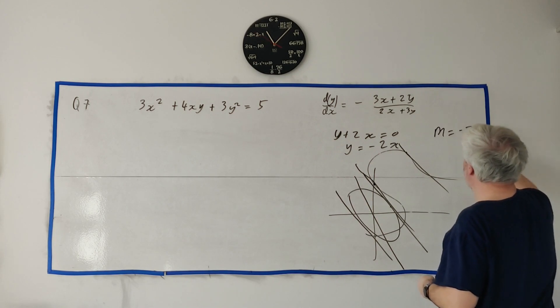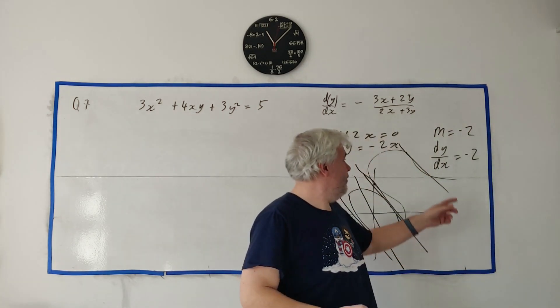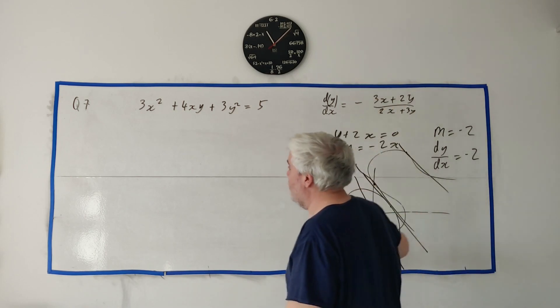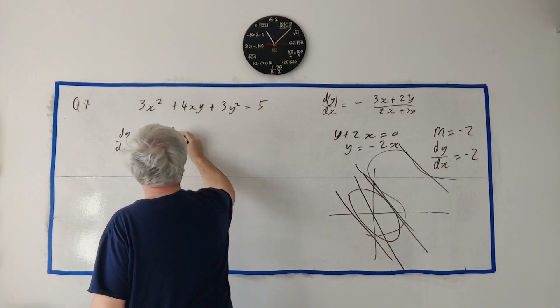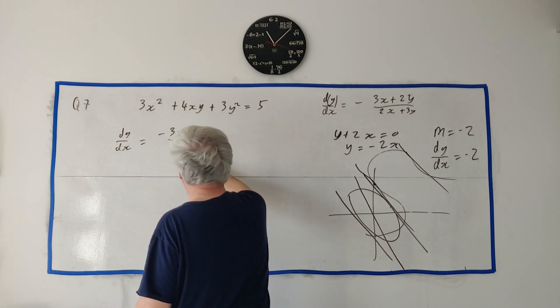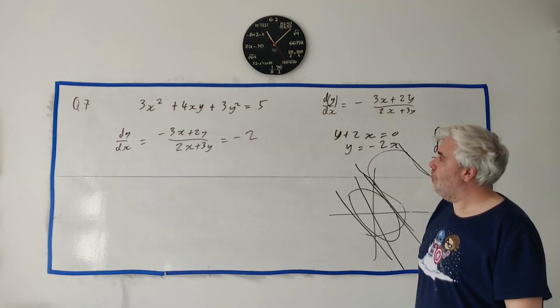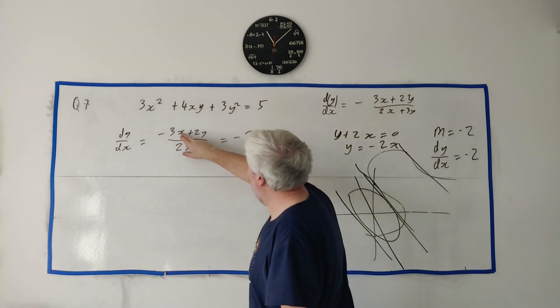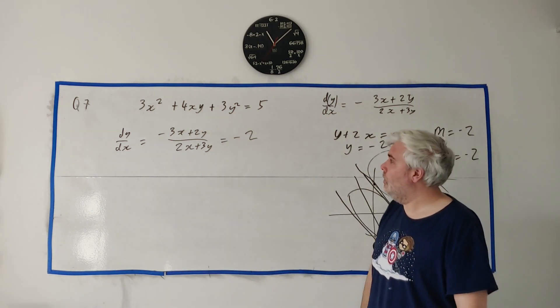What has a slope of minus 2? A slope, that means it has a derivative or dy/dx is equal to minus 2 at the points we're looking for. Where we're looking for dy/dx is minus 2. The slope is minus 2. It's parallel to this line. And we know what dy/dx is. Here it is up here. dy/dx is equal to minus 3x plus 2y over 2x plus 3y. And now we know that's equal to minus 2.